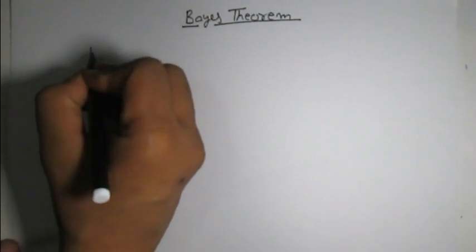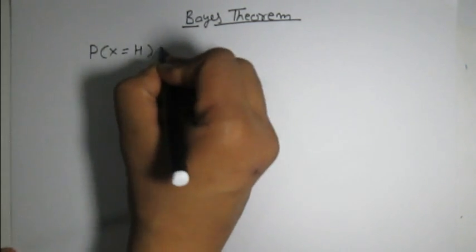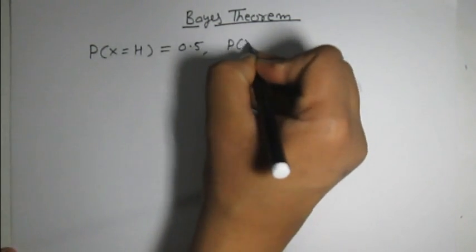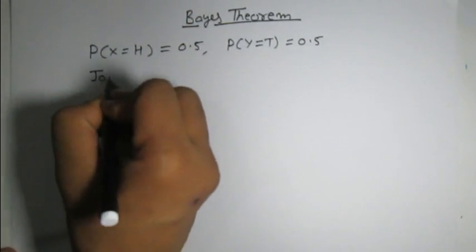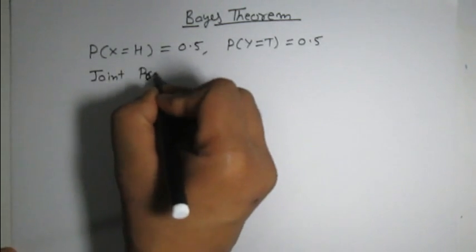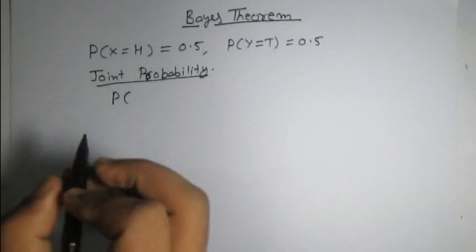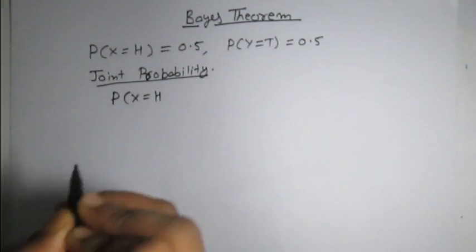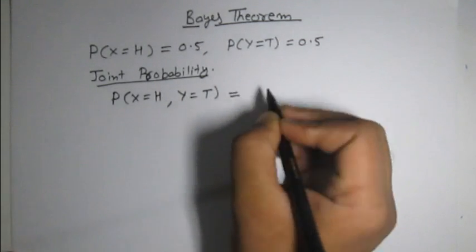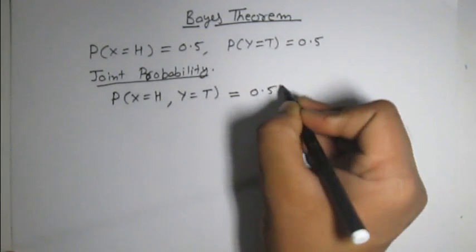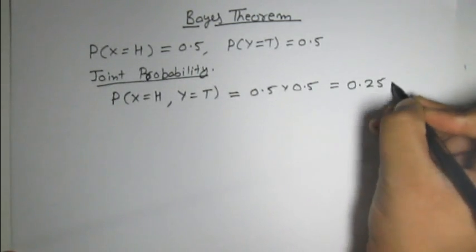Suppose we have two fair coins having equal chances of head and tail. The probability of head is equal to 0.5 and probability of tail is equal to 0.5. We can calculate the joint probability of the first event being head and the second event being tail, which is equal to 0.5 times 0.5, giving us 0.25.